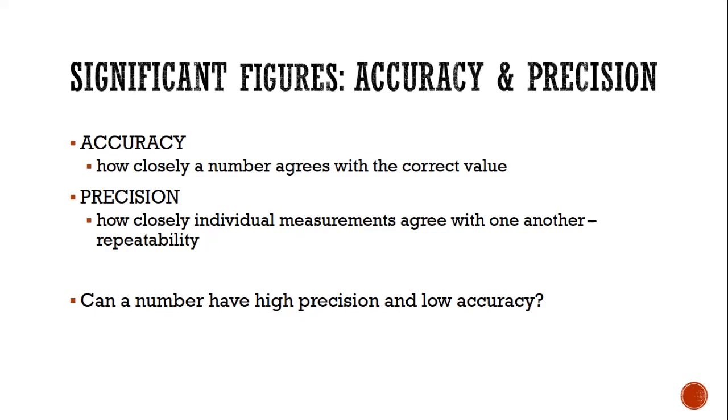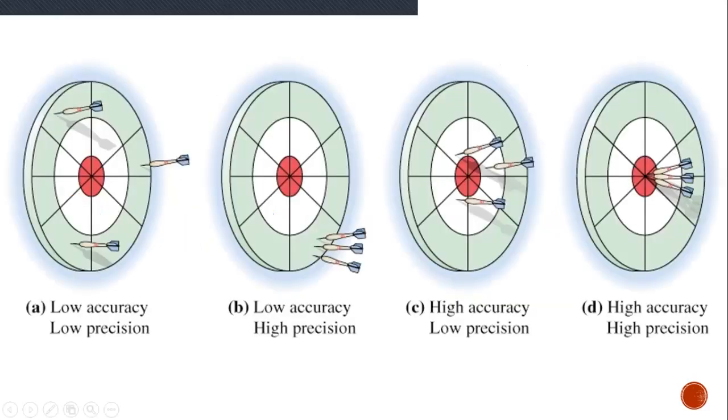So I want you to think for a moment. Is there a way in which you could have high precision, but low accuracy? And what would that look like? The best way to imagine that is a dart board. Let's take them from letter A all the way through letter D.